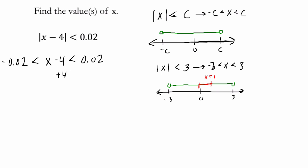So to solve for x here, we add 4. We do it to every side, keep this inequality balanced. And we get 3.98 less than x less than 4.02. We're done.